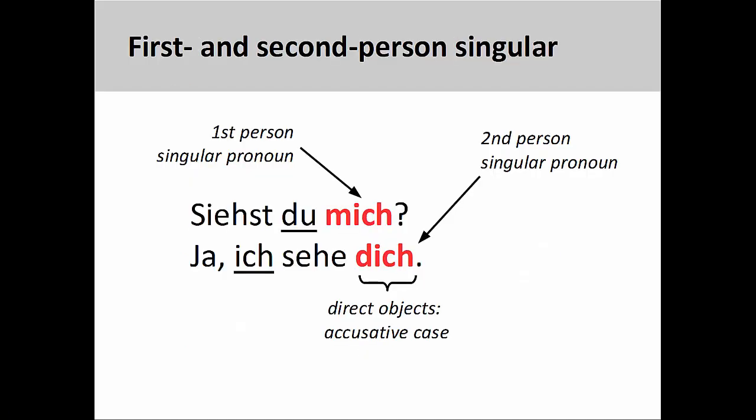Let's see how some of these accusative personal pronouns function in a sentence. In the two sentences you see here — siehst du mich? Ja, ich sehe dich. Do you see me? Yes, I see you. — both pronouns are the direct objects of the verb sehen, which requires them to be in the accusative case. For contrast, the subjects of each sentence, which are underlined, are in the nominative case. Here the distinction between nominative and accusative forms is very clear.